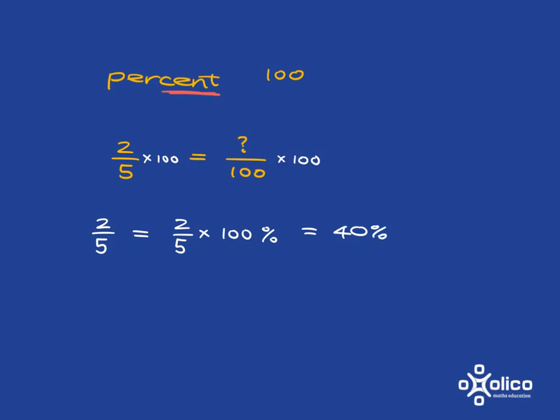So two-fifths is exactly the same as forty percent. And just to write it in fraction form, two-fifths is the same as forty over a hundred. Hopefully you can see that very easily.